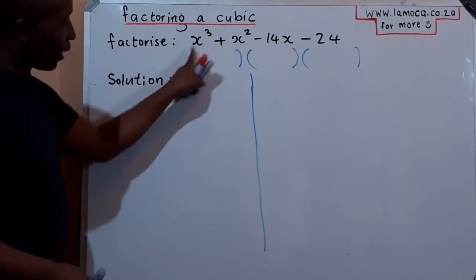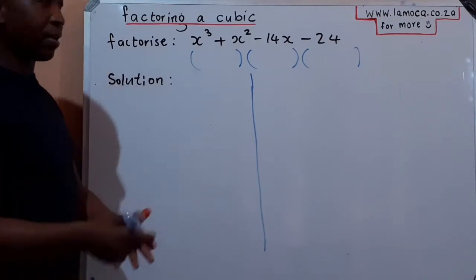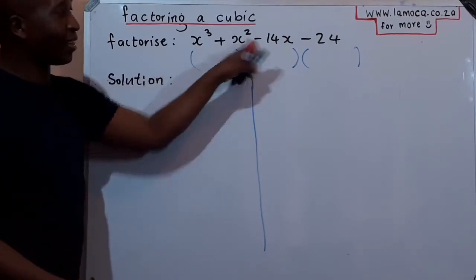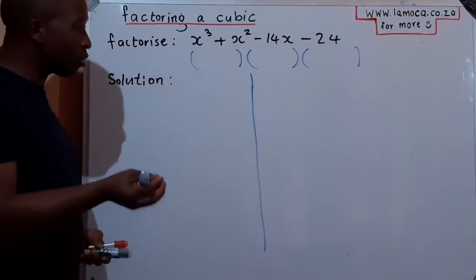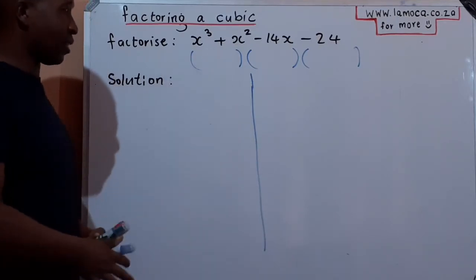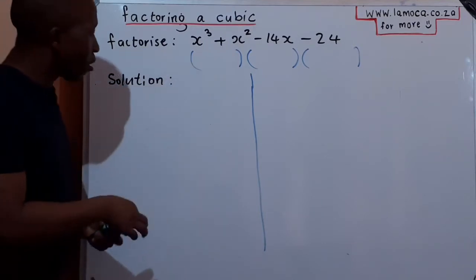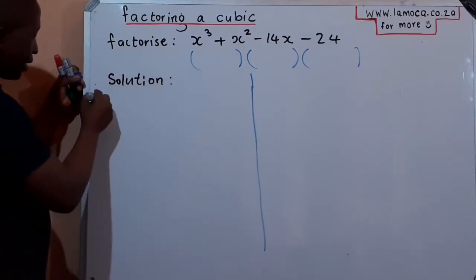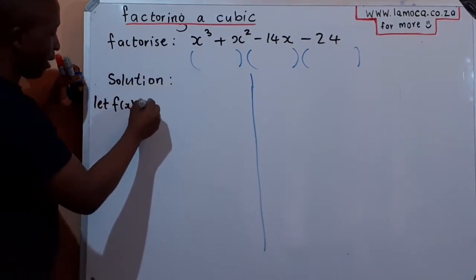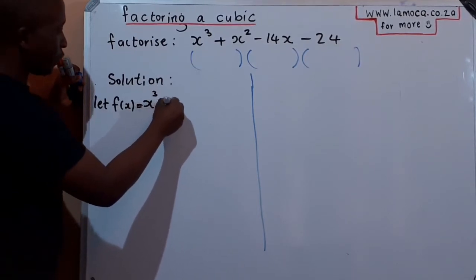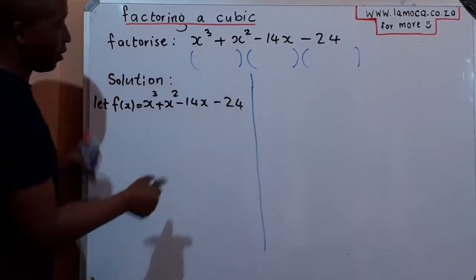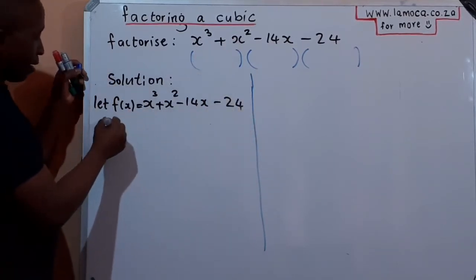The first factor we always find using the remainder factor theorem. That says we have to look for a number we can substitute for x such that the whole expression becomes zero. That number will be the root that gives birth to the first factor. So let f(x) = x³ + x² − 14x − 24.